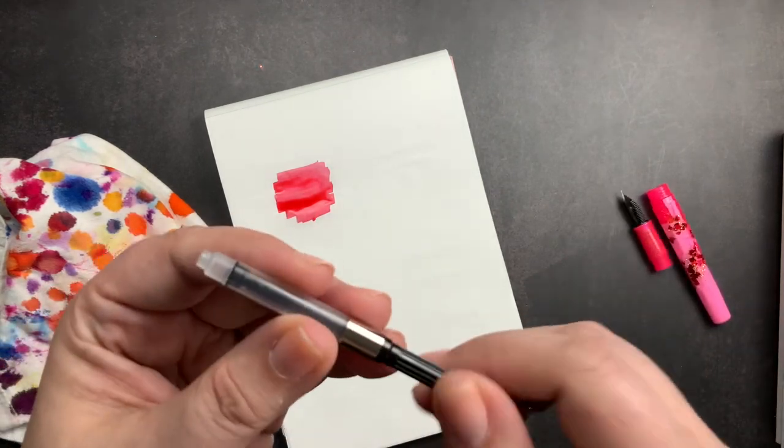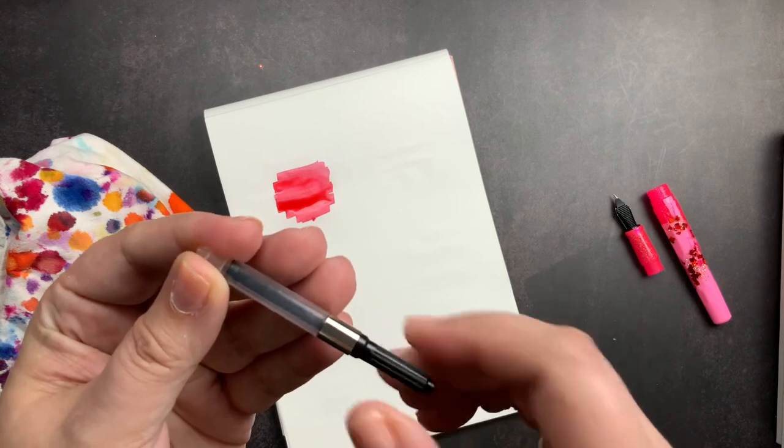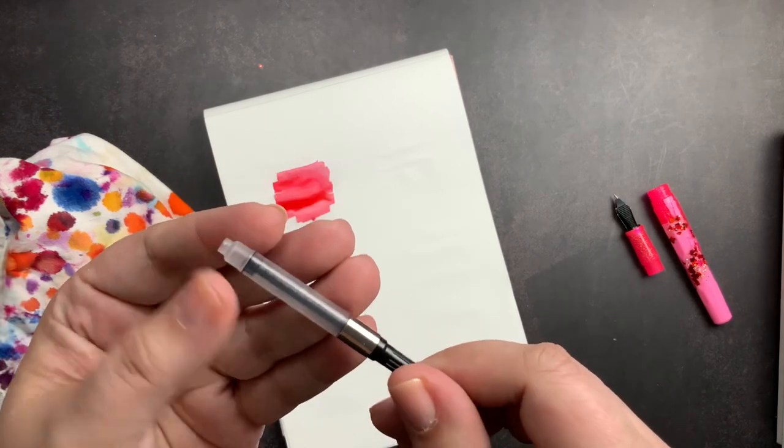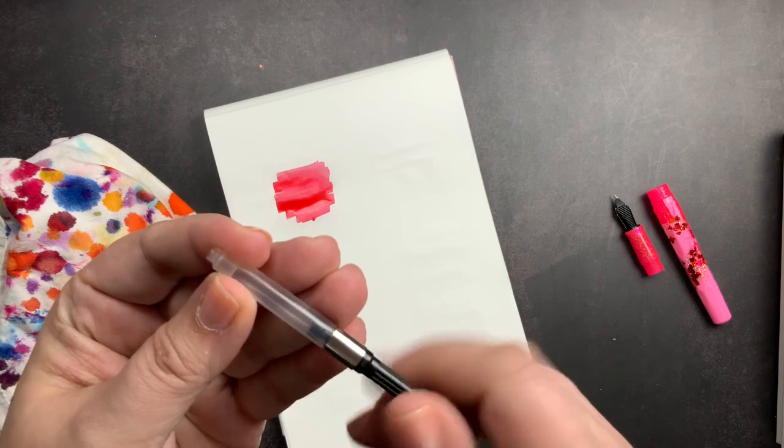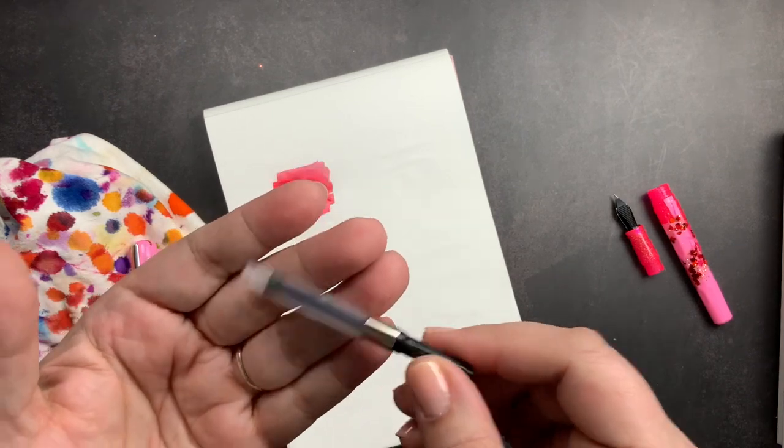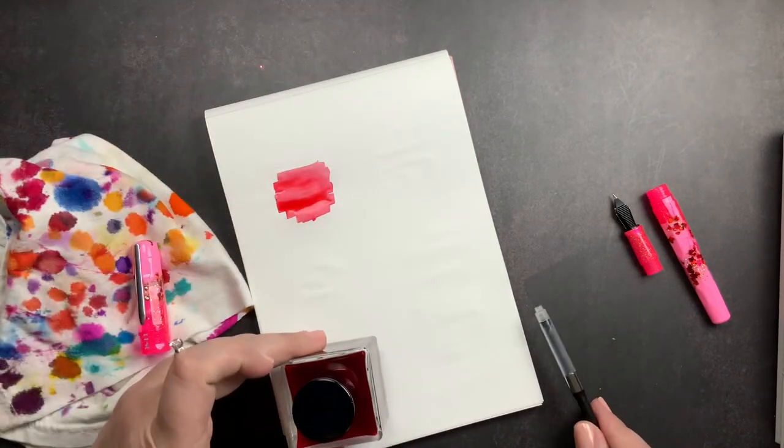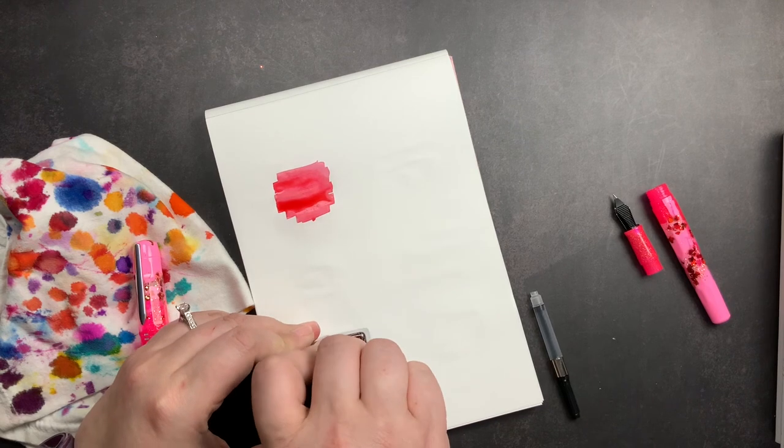But for now I just have the standard nibs on there. And then in here I have the converter. It's just a standard international converter. You twist the back to suck in or push out the ink or water. So I'm going to put it all the way down in the down position. We're going to put it in the ink, twist clockwise, fill it with ink.